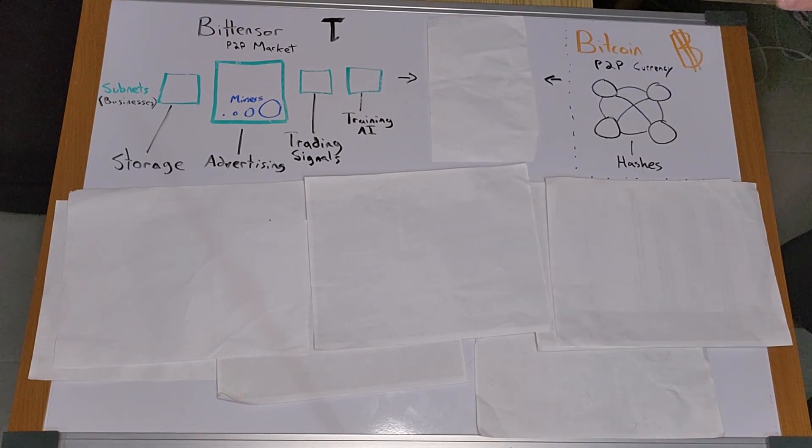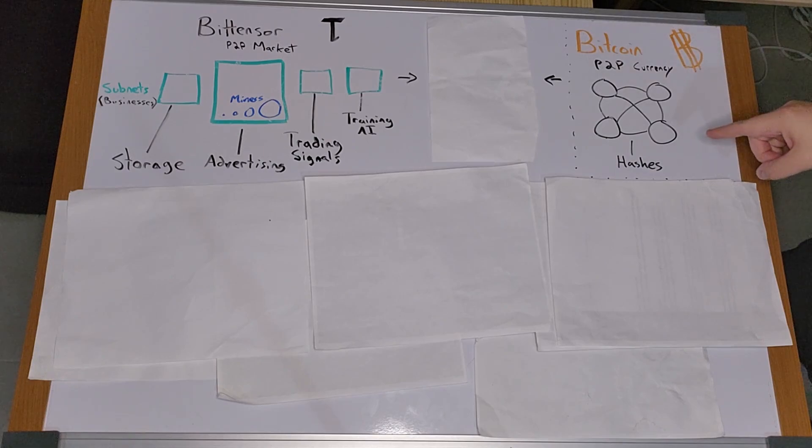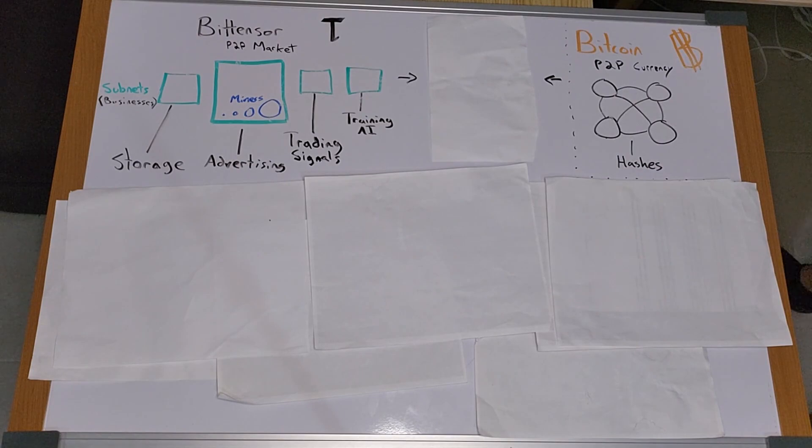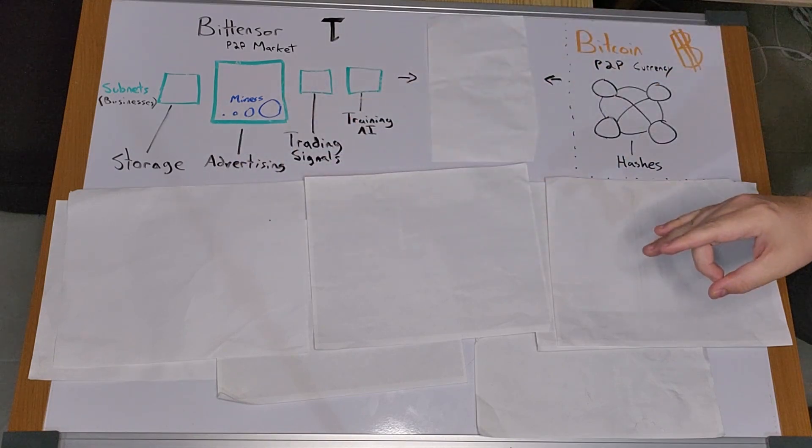With Bitcoin, one of the appeals is you can be off-grid and make money anonymously by mining hashes. With BitTensor, you can make money anonymously by mining, but instead of mining hashes, you can mine diverse, intrinsically valuable commodities. For the first time, you can work and produce a commodity with value outside of centralized control.